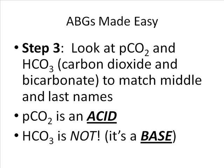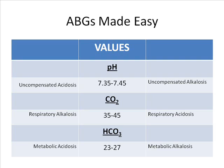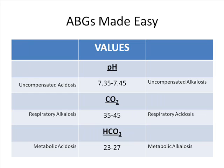Bicarb is a base. So here we have the normal values. Your pH is 7.35 to 7.45 — anything less than 7.35 is uncompensated acidosis, anything greater than 7.45 is uncompensated alkalosis. Now remember, your CO2 normal range is 35 to 45. Anything less than 35 and we have respiratory alkalosis — think of all that CO2 getting blown off.